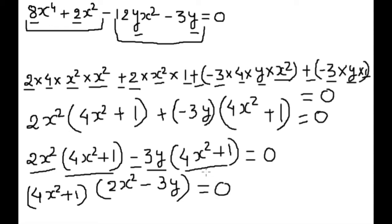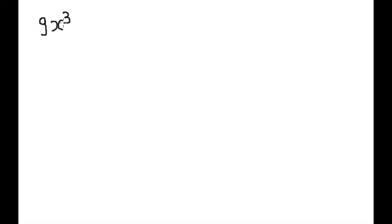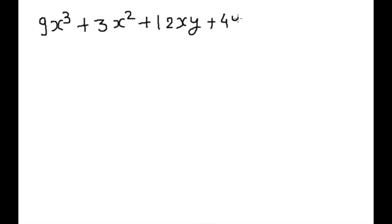Let's take another example. The next example is 9x cubed plus 3x squared plus 12xy plus 4y equals 0. At first sight we can see 3 is common in the first two terms, so we will make one group of those. And 4 and y are common in the last two terms, so we will make another group.